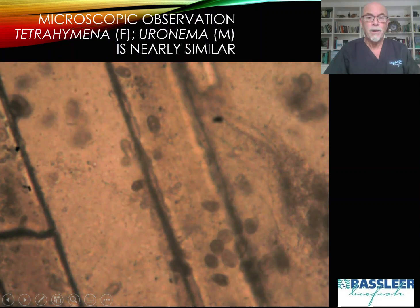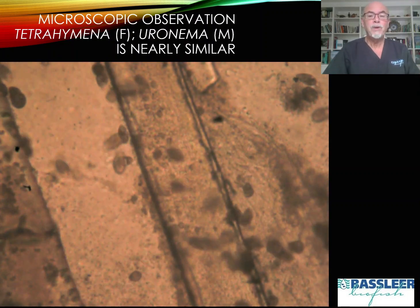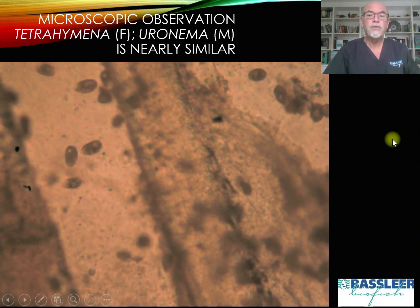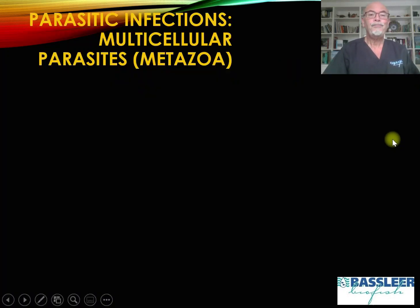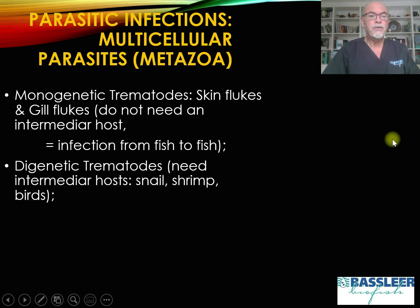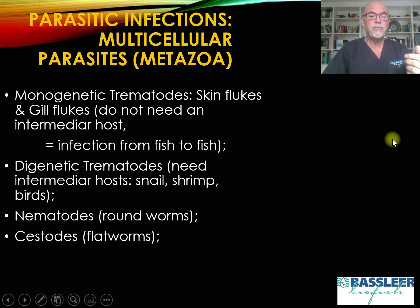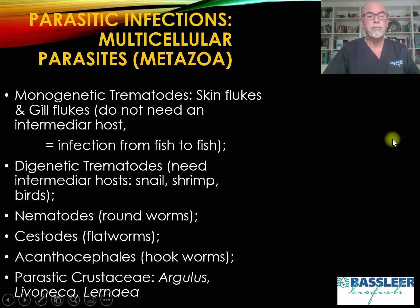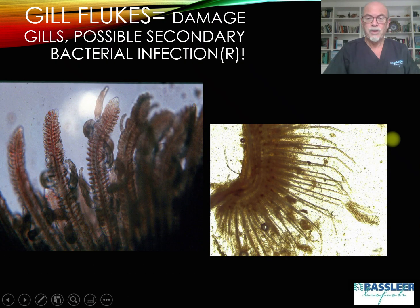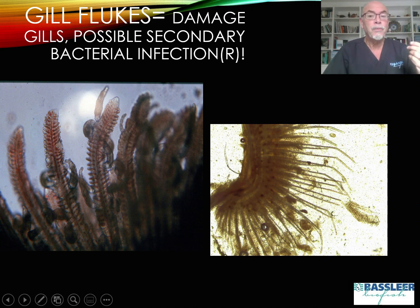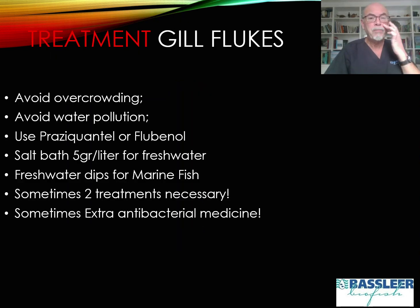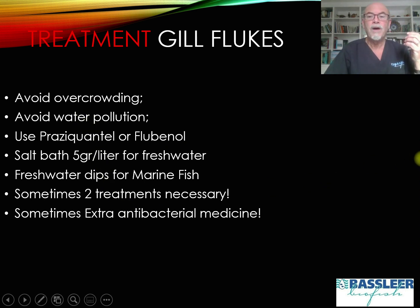Also Tetrahymena, or Uronema — Uronema in marine fish is a very serious problem in certain circumstances. We will discuss trematodes, flukes, and multicellular parasites — many more to come in our presentations. We will show the slides as we do in a microscopic examination. We will also discuss the damage that occurs on the fish, and that you may need to treat bacterial infections not only for the parasite but also the bacteria. For example, we will discuss the treatment of gill flukes and what steps you can take to help.